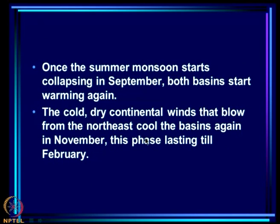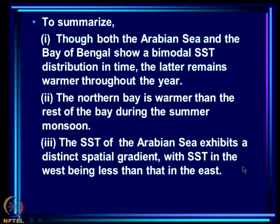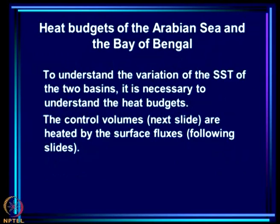Cold dry continental winds blowing from the northeast cool the basins again in November, and this phase lasts till February. To summarize: though both the Arabian Sea and the Bay of Bengal show a bimodal SST distribution in time, the Bay remains warmer throughout the year. The northern Bay is warmer than the rest of the Bay during the summer monsoon. The SST of the Arabian Sea exhibits a distinct spatial gradient, with SST in the west being less than that in the east.